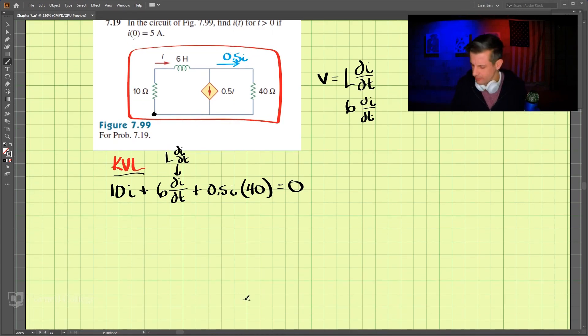So let's simplify this a little bit. This comes out over here to 40 times one half, that's 20I. So we have 10 plus 20, so we have 6 dI/dt plus 30I equals 0.